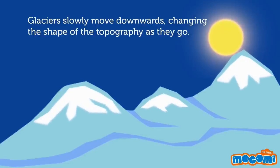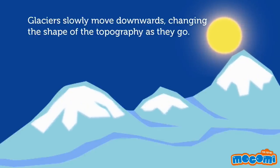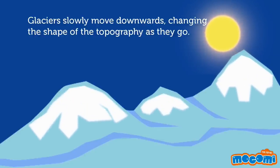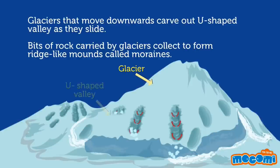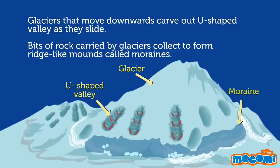Glaciers slowly move downwards, changing the shape of the topography as they go. Glaciers that move downwards carve out U-shaped valleys as they slide. Bits of rocks carried by glaciers collect to form ridge-like mounds called moraines.